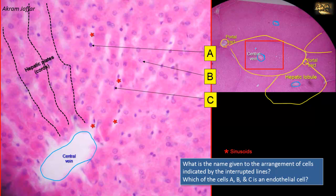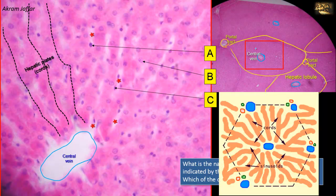The hepatic cords, represented by the interrupted lines, are one cell thick, and each hepatocyte is thus exposed to blood on at least two sides. This increases the exchange between the blood and the hepatocytes.